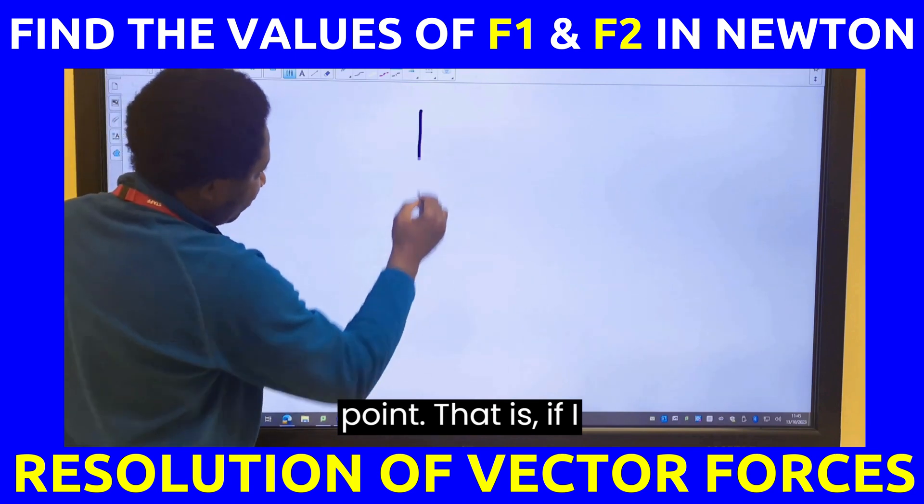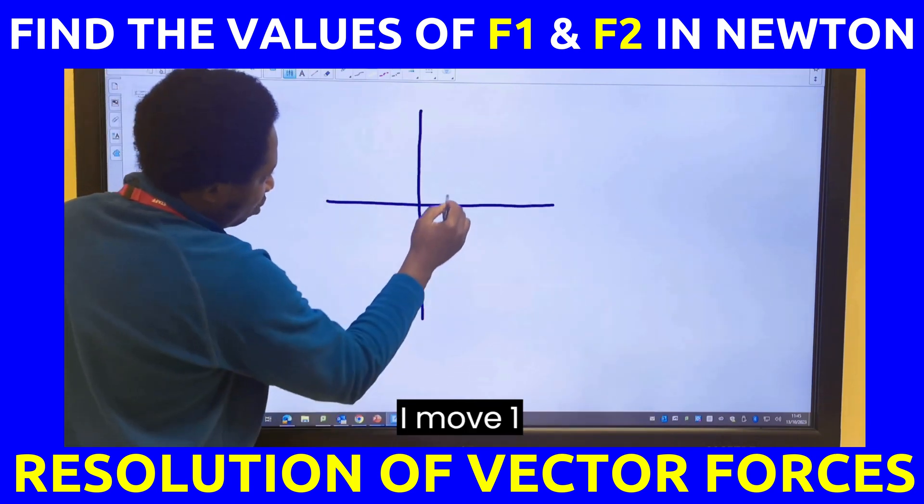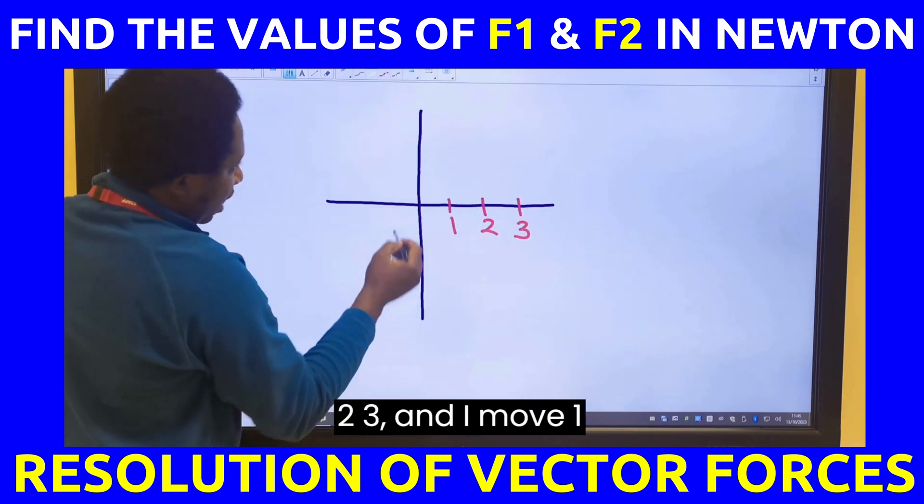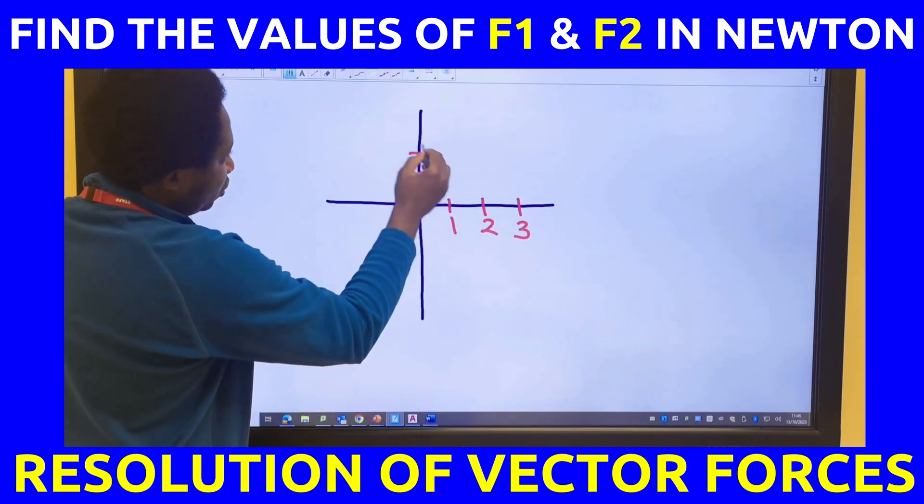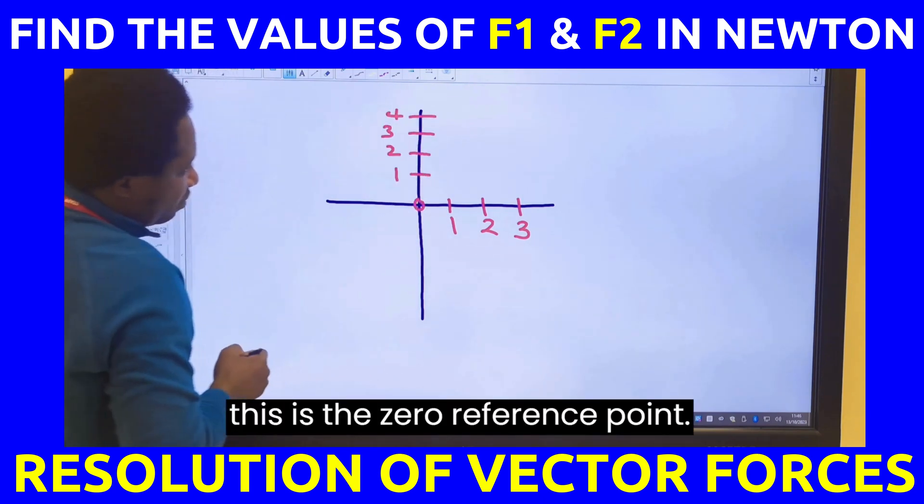That is, if I have a Cartesian plane, if I move 1, 2, 3 and I move 1, 2, 3, 4, this is the 0 reference point.